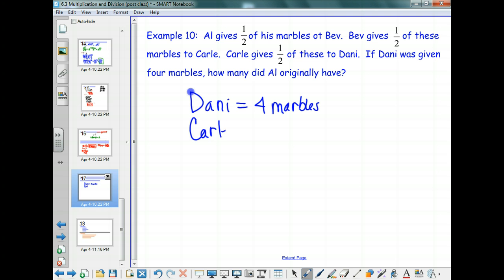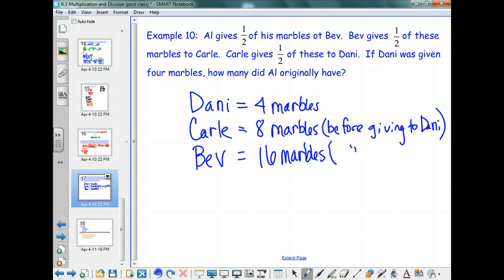Carl. So Carl originally had eight before he gave them away, right? Eight marbles. And this is before giving to Danny. It doesn't look very much like Danny. Okay, now what? Bev. What about Bev? She had 16 marbles. Again, we've got the same idea, but she gave hers to Carl. And then what? Al. So what about Al? 32 marbles. 32 marbles. Before giving them to Bev.